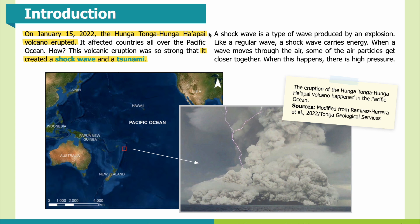On January 15, 2022, the Hunga Tonga-Hunga Ha'apai volcano erupted. It affected countries all over the Pacific Ocean. This volcanic eruption was so strong that it created a shock wave and a tsunami.